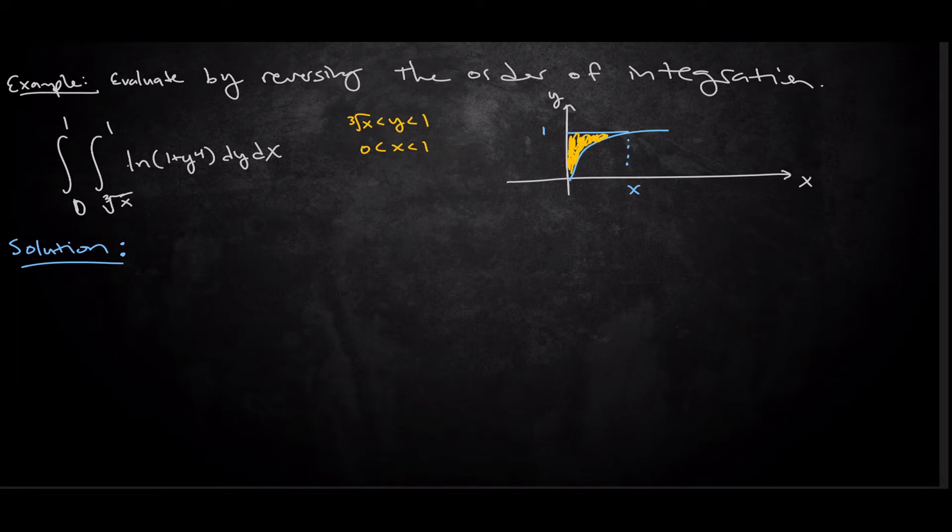So to reverse the order of integration, that means I need to change these two, but I can't just swap them. I have to also change the bounds appropriately. If I'm gonna integrate x first, x is gonna be a variable from left to right. Y goes from bottom to top, x goes from left to right.